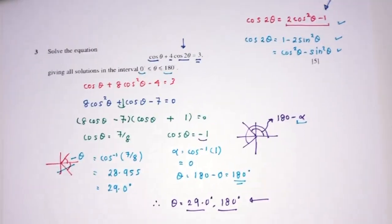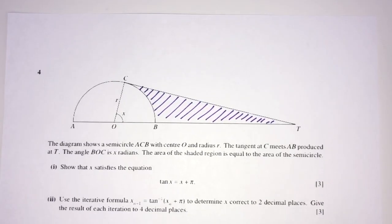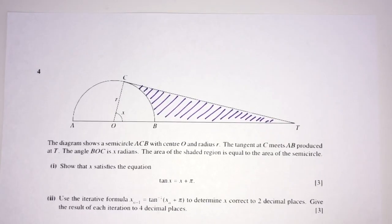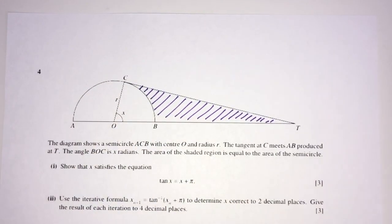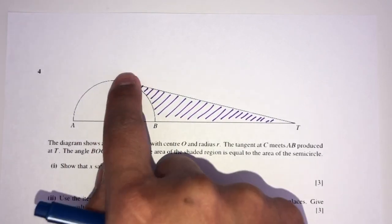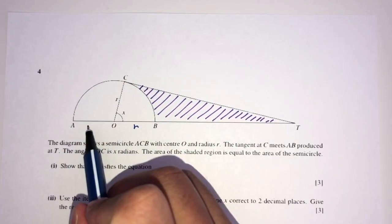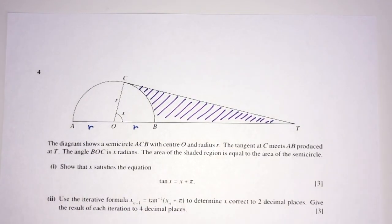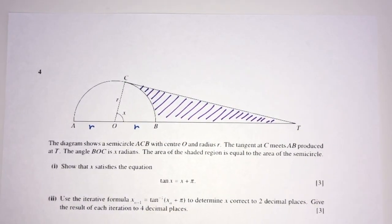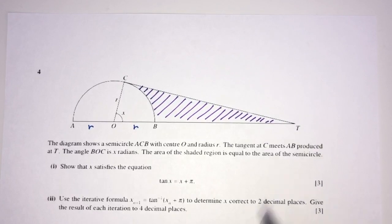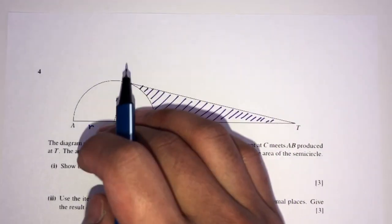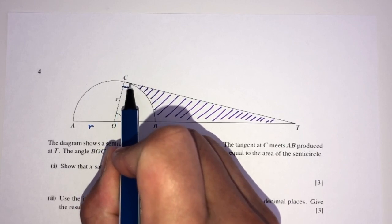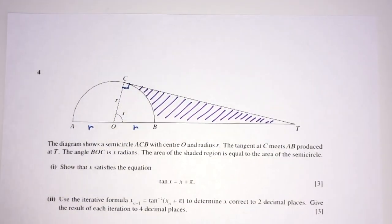This is question number 3. Now let's move on to question number 4. The diagram shows a semicircle ACB with center O and radius R. So OC, OB, and OA are all equal to R, since they are radii of the same semicircle. The tangent at C meets the line: since it is a tangent touching the center, the angle must be 90 degrees.